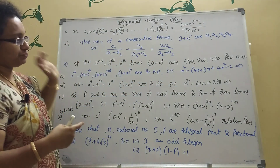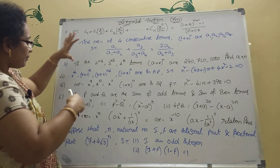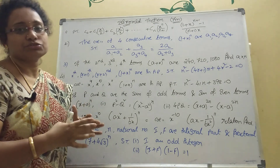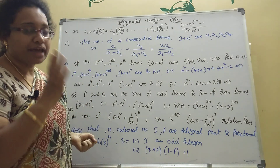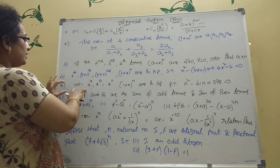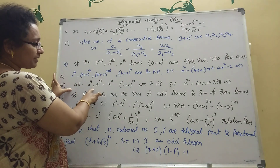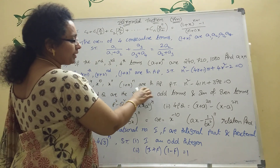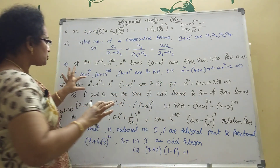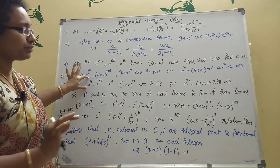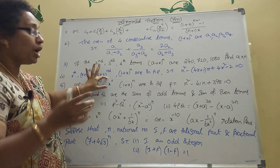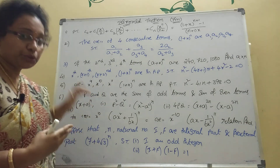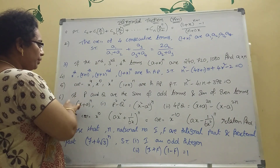The remaining answers I will upload tomorrow. These are very important problems — damn sure problems. Next: if the coefficients of x⁹, x¹⁰, and x¹¹ in the expansion of (1+x)ⁿ are in AP, then prove it. This and the previous sum are similar models — if you can do one, you can do the other. Practice both well.